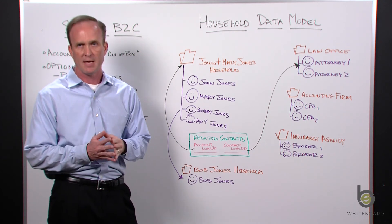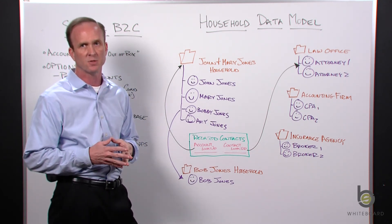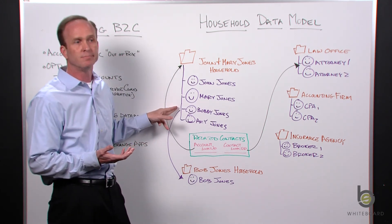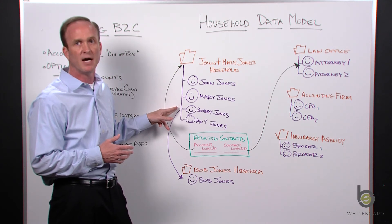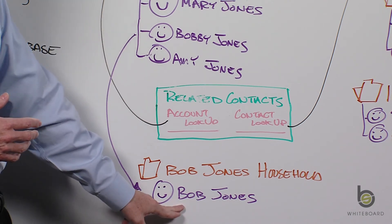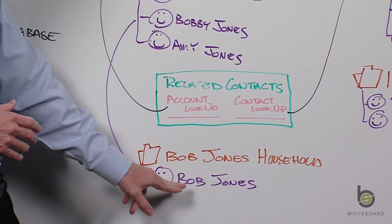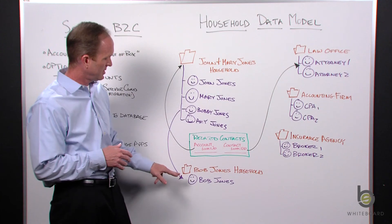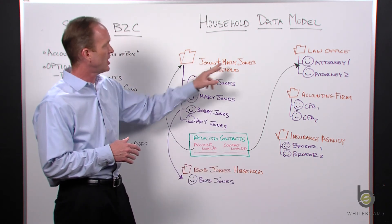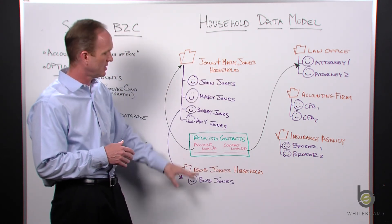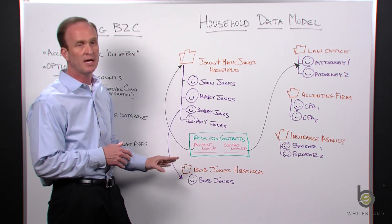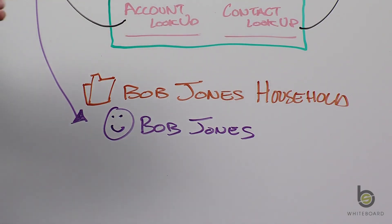One more dynamic to consider: what happens when Bobby Jones grows up, has his own financial accounts, and is buying real estate on his own? He's now Bob Jones. It's perfectly okay to have one contact under one account — a household with a single person — so we'd have a Bob Jones household alongside the John and Mary Jones household. A household account can have just a single contact if that's the only person in that entity or relationship.